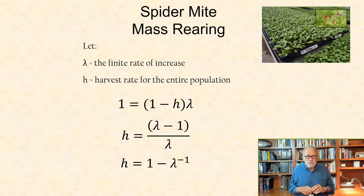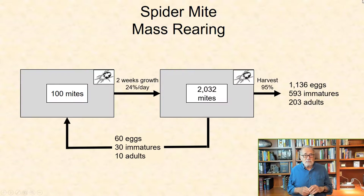The rate of population increase for spider mites is lambda equal 1.24, suggesting that 1 minus the inverse of lambda, or 0.194, equal the fraction of the entire population of all stages that can be removed daily, and still maintain population replacement.